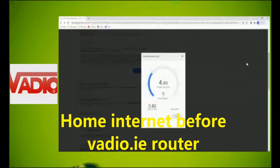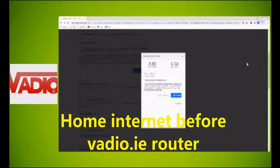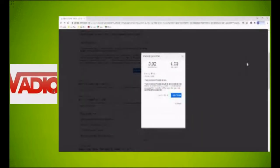We start off at very bad speed on the computer: 3.82 upload and 4.59 download, very unclear even on the computer for the computer to operate. Now we try the outside router by VADIO. Starting point, use the tool provided.